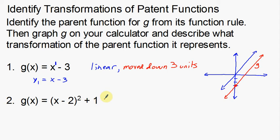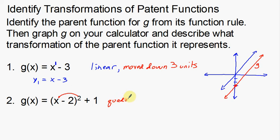G of X is equal to the quantity X minus 2, squared, plus 1. Now when I look at this function it looks a bit complicated — I'm squaring this quantity and there's a plus 1. To identify the parent function, it's very simple: find the variable and ask what power it's at. This X is being squared, so this function is X to the second power, which means this is a quadratic function.